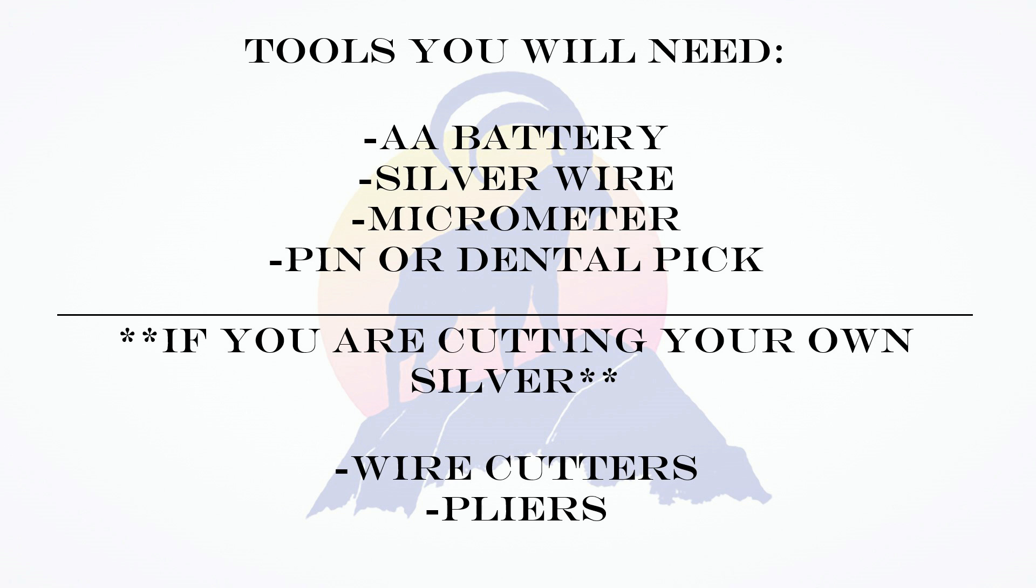You can get silver wire wherever you want to get it or you can order some from us and we will send you 10 pieces that have been pre-cut and pre-shaped. If you are cutting your own silver wire, you will need a pair of wire cutters as well as a pair of pliers.